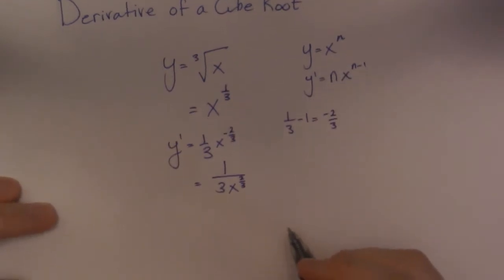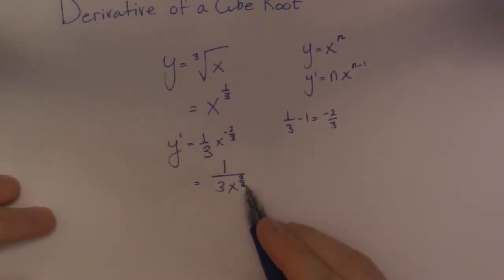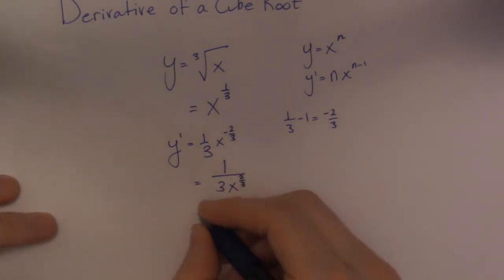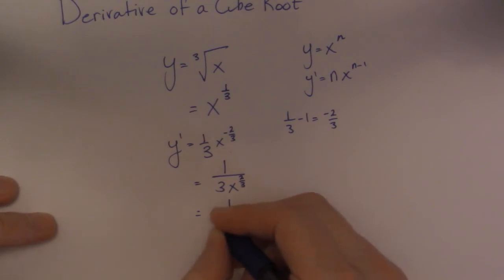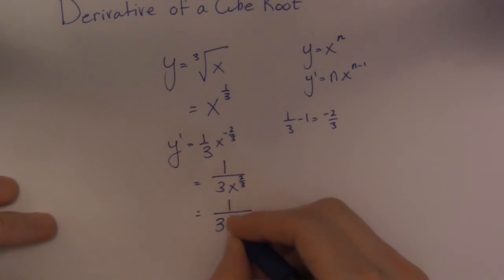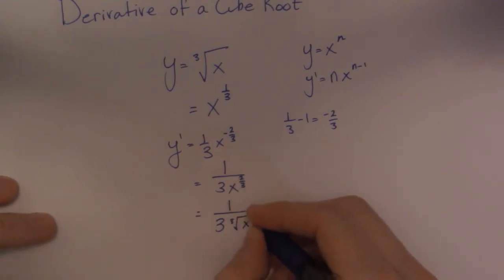Now if your calculus teacher doesn't like exponents in fractional form, he might make you write it as a radical. So the 3 stays as the index — that's the cube root — and then the top number becomes the exponent of x, so x squared inside the cube root.